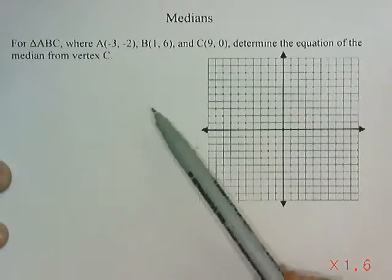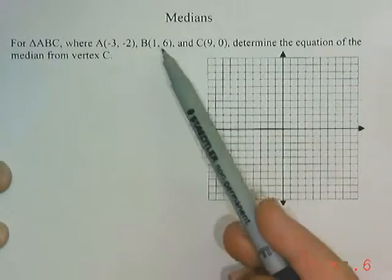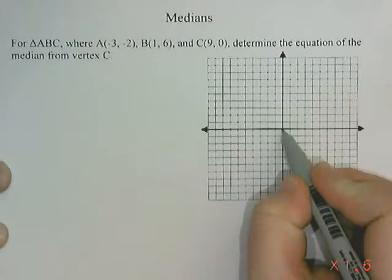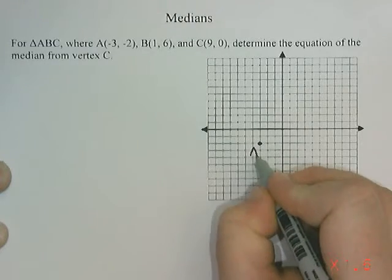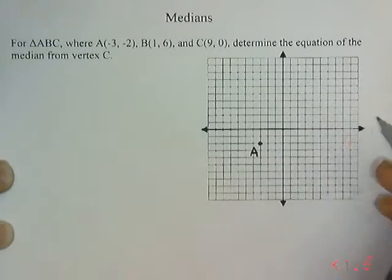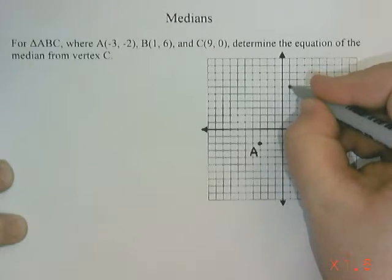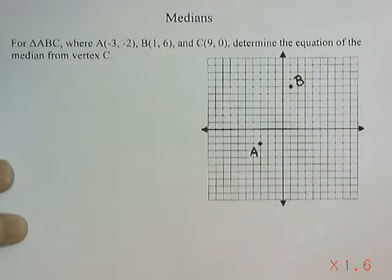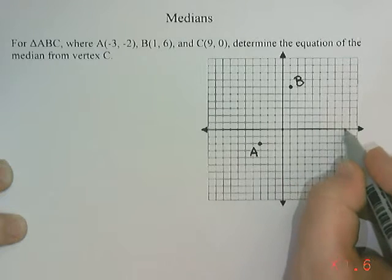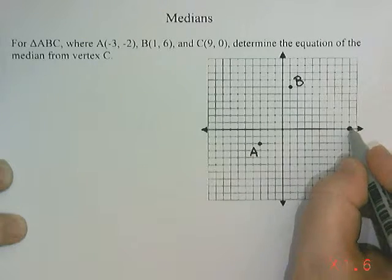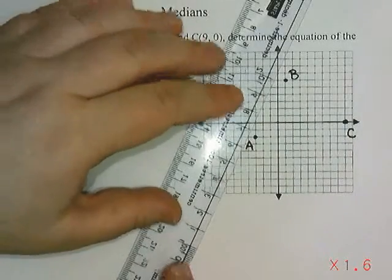So before we talk about what a median is, the first thing I'm going to do is plot my points A, B, and C. So A is the point negative 3, negative 2, so on my x-axis I find negative 3, on the y-axis negative 2, and there's my point A. Then B is 1 and 6, I go to 1 on the x-axis, 6 on the y-axis, and there's point B. And then point C is the point 9 and 0, so on the x-axis I find 9, and then I just stay on the axis because it's 0. And then I'm going to take my ruler and connect those 3 points to make a triangle.